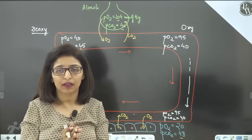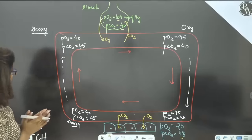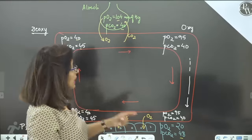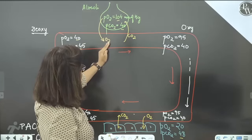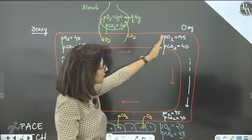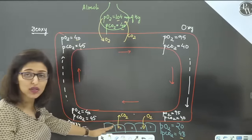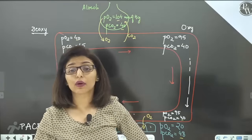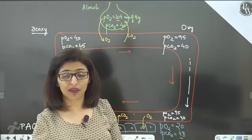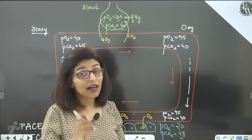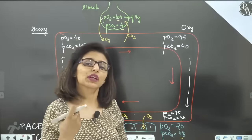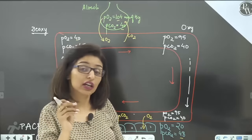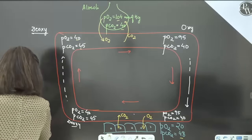Gaseous exchange is complete. Now let's understand what happens inside the blood — how does blood transport these gases? Blood is the transporting fluid that carries oxygen and carbon dioxide. The main cells in blood are RBCs — red blood cells — which are essentially bags of hemoglobin. There are enormous amounts of hemoglobin inside each RBC, and Mr. Hemoglobin is going to carry the gases.